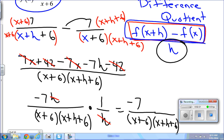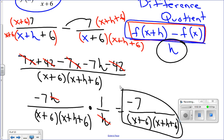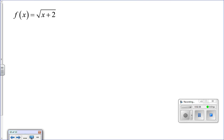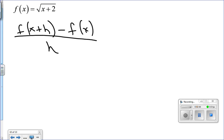And that right there is the difference quotient for this rational expression. Let's do a radical expression. Once again, the formula is f of x plus h minus f of x all over h. With radical expressions, you're going to want to do the entire thing in one fell swoop. So it looks like this: I have the square root of x plus h plus 2, and we'll subtract the square root of x plus 2, all divided by h.